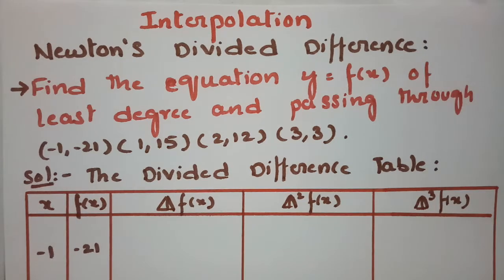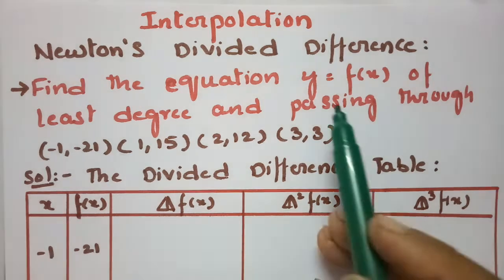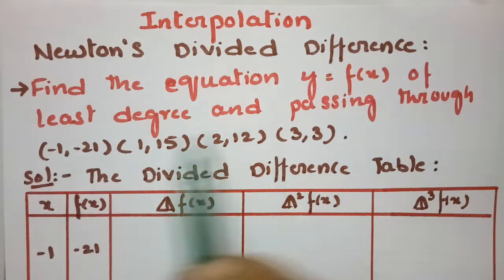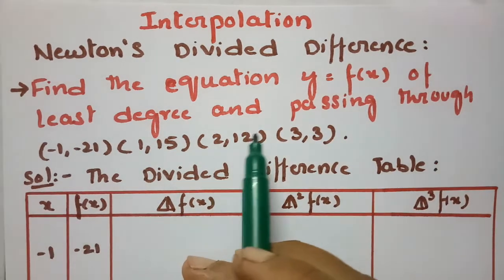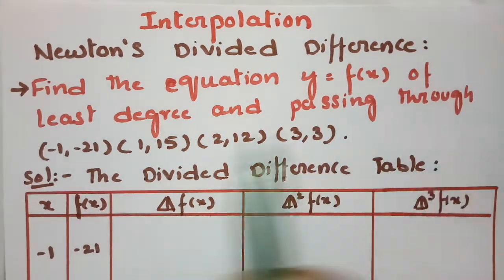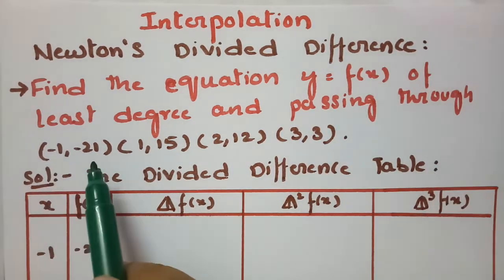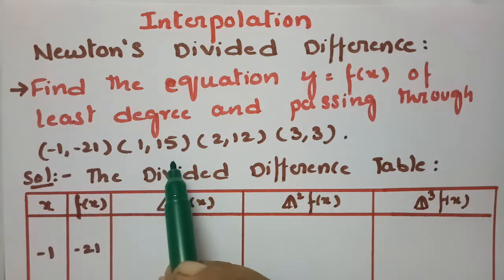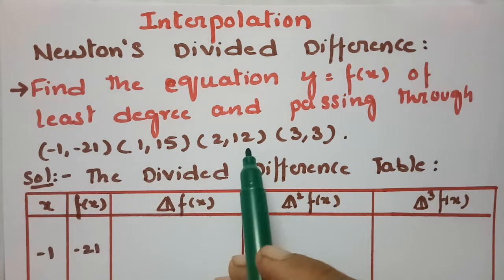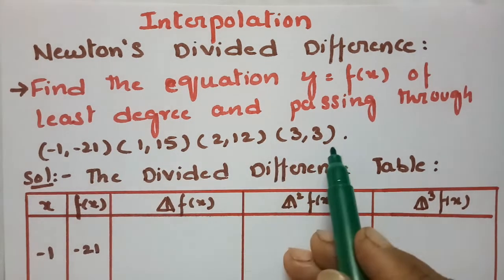In today's video, I am going to explain the problem using Newton divided difference. We have to find the equation of y = f(x) of the least degree which passes through the points: (-1, -21), (1, 15), (2, 12), and (3, 3).